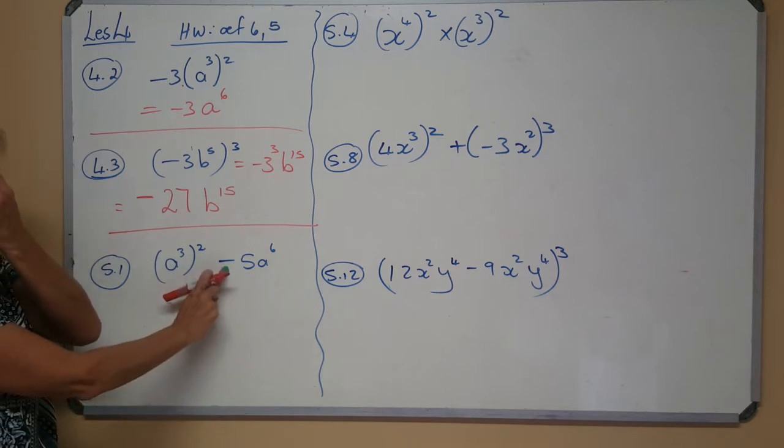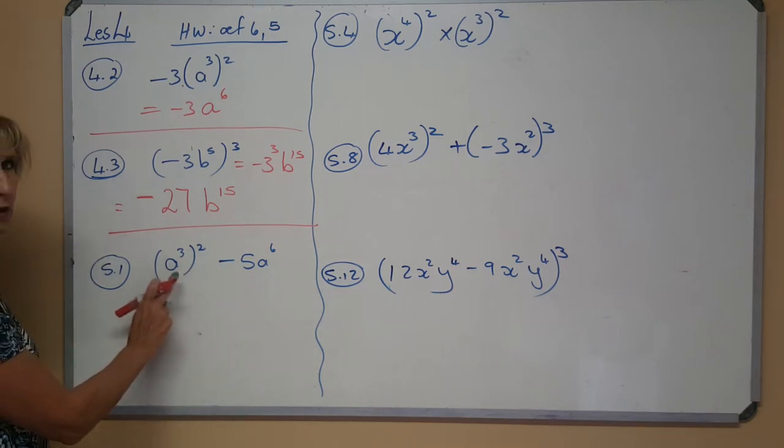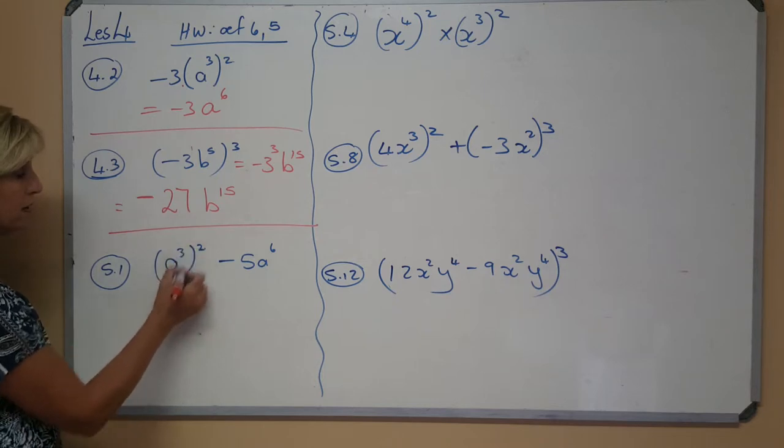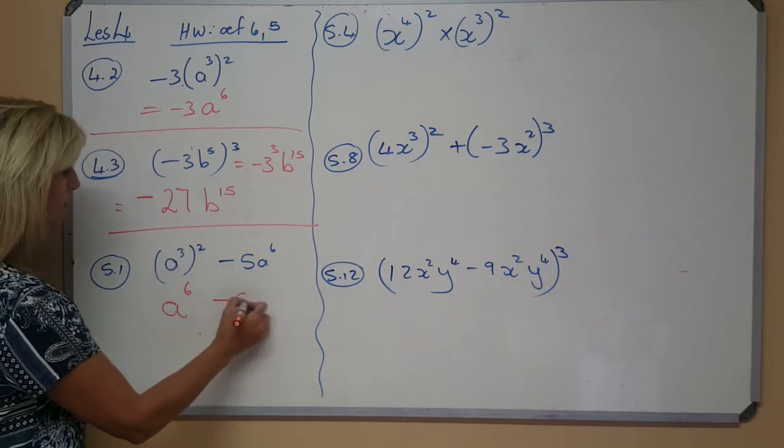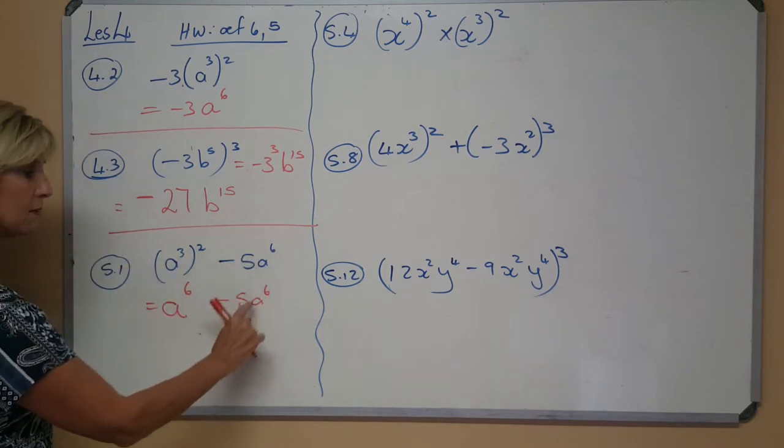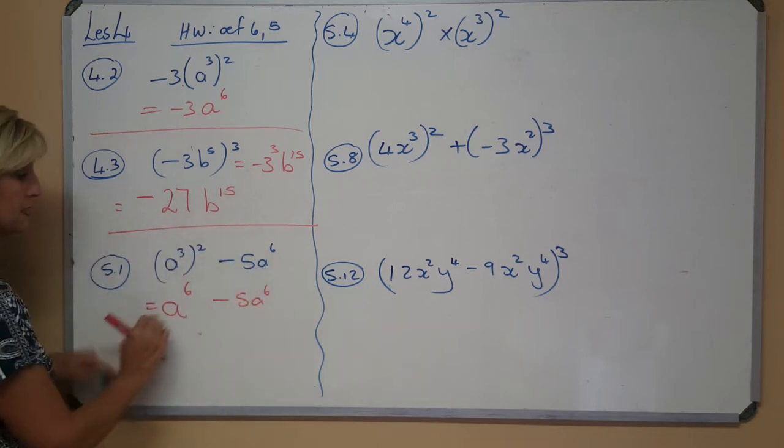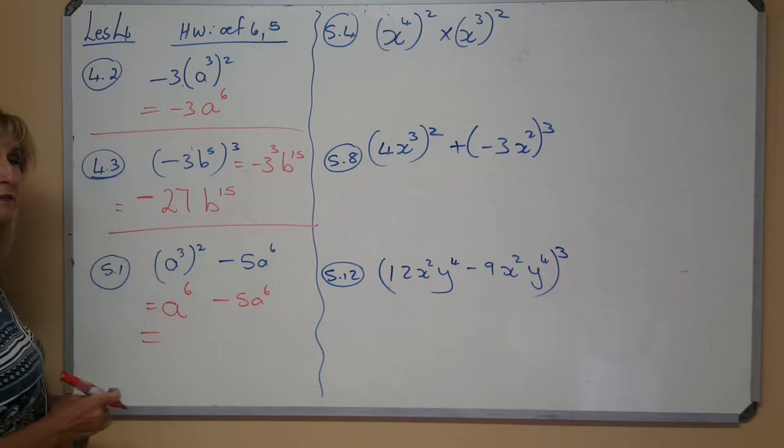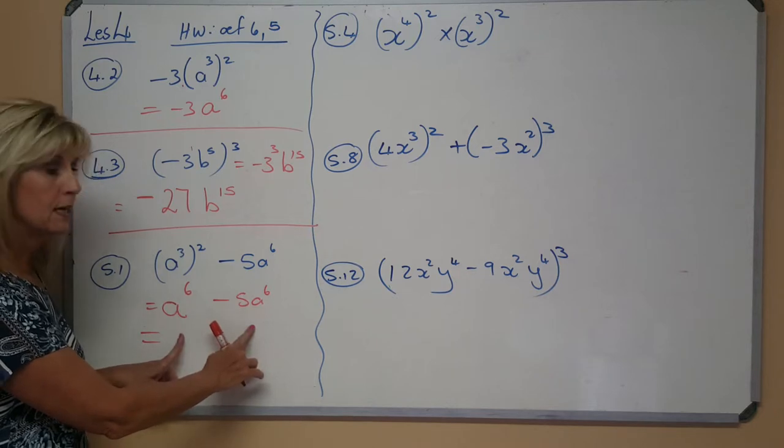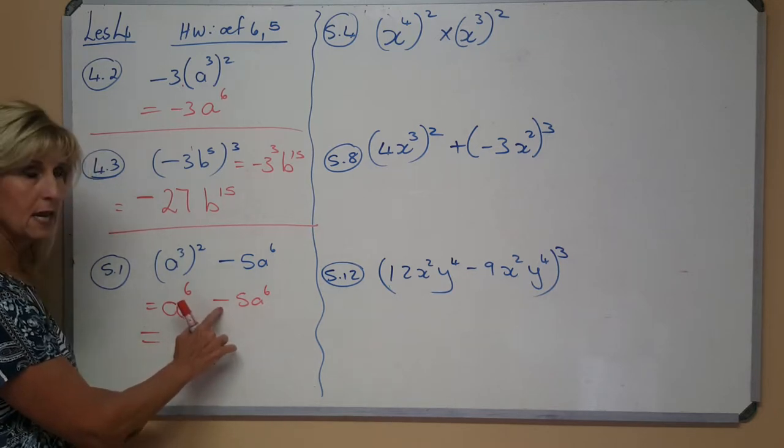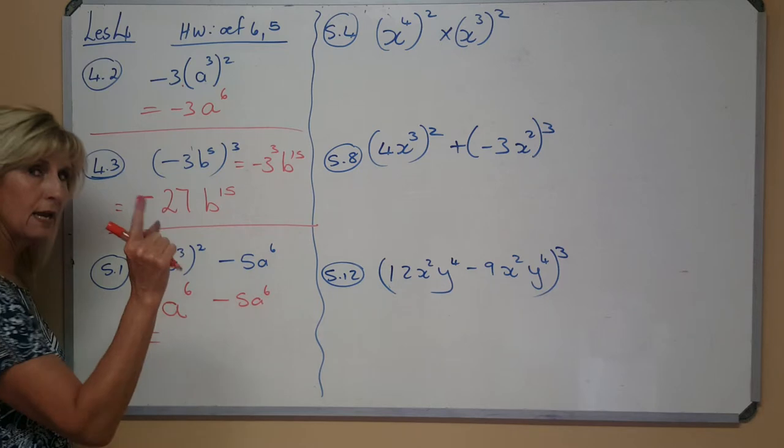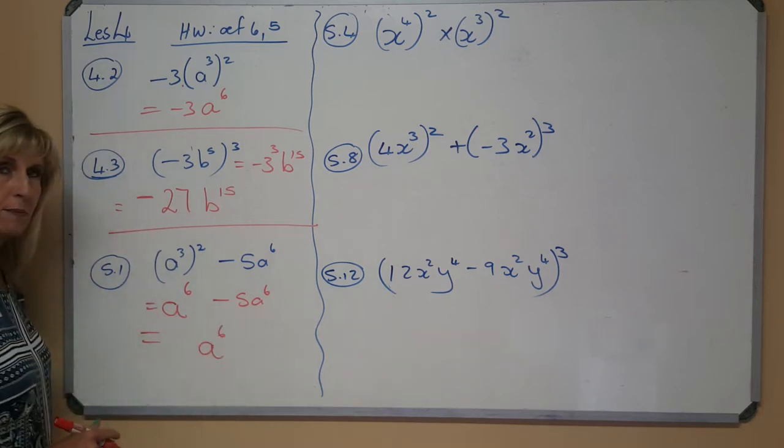For the next one, there is a subtraction, but you first have to do this bracket. Always first the brackets, and the brackets say multiply the exponents. So it's going to be 8 to the power of multiply the exponents is 6. Nothing happening here at the back. Do not leave it away. Is it possible to go on? Yes, I have how many terms? There are 2 terms separated by the minus.